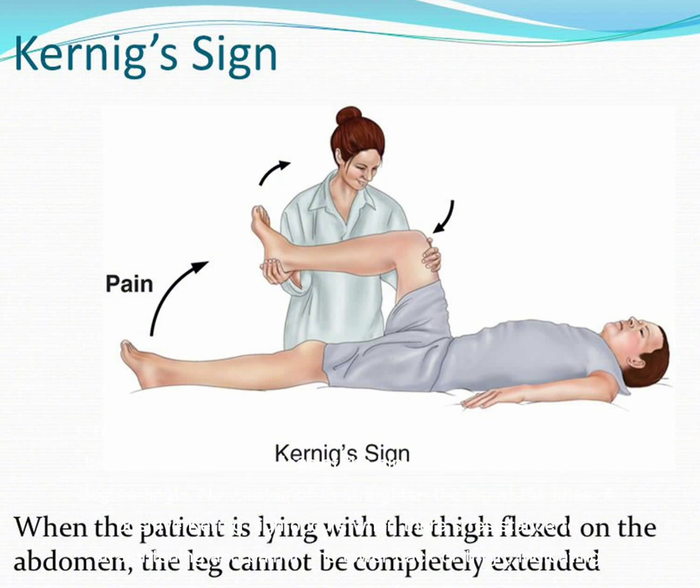The Koenig's sign is tested by having the patient lie flat on their back. Flex one of their legs at the hip and knee, creating a 90-degree angle. Now, attempt to straighten the leg at the knee. A positive Koenig's sign occurs when there's resistance to straightening and pain in the lower back or thigh, indicating possible meningeal irritation.